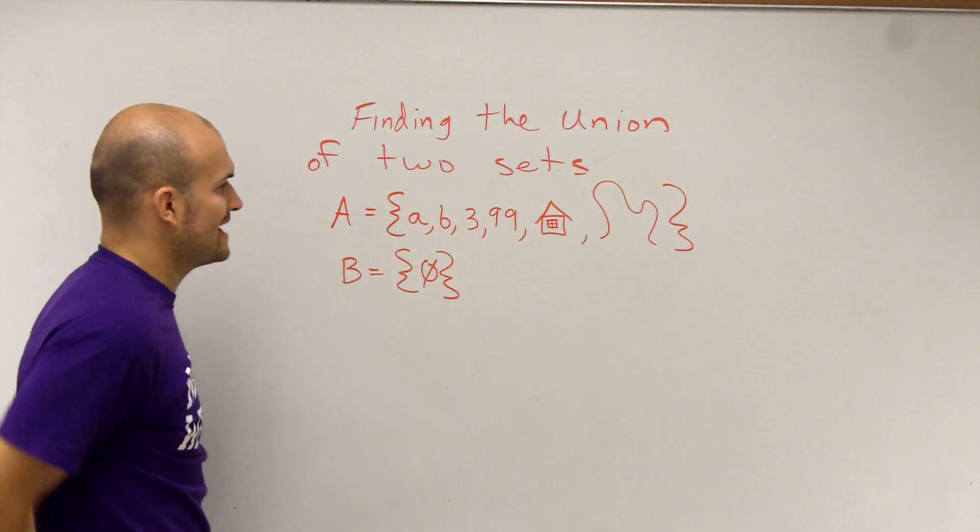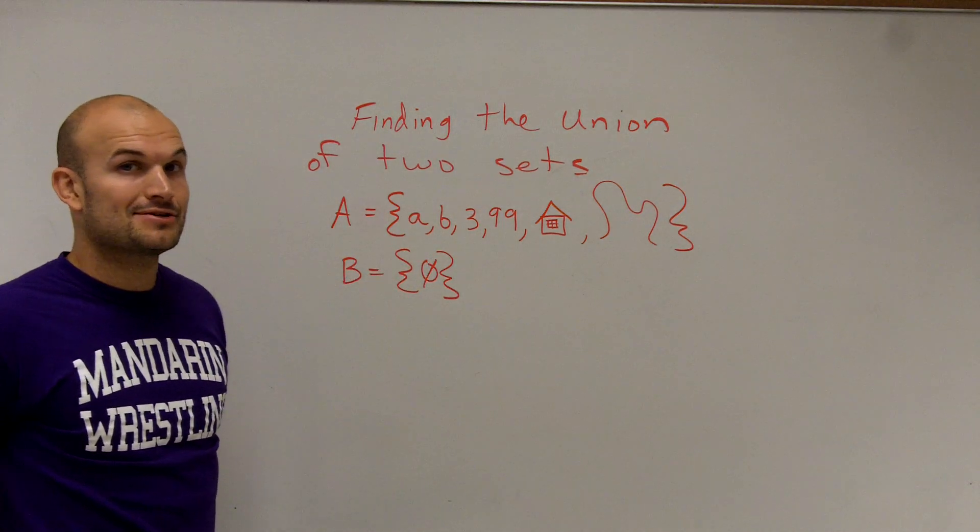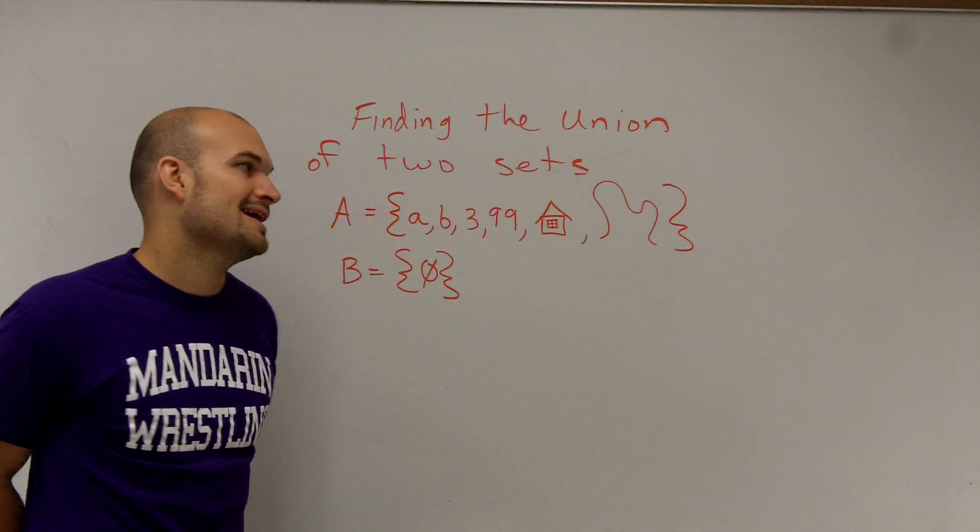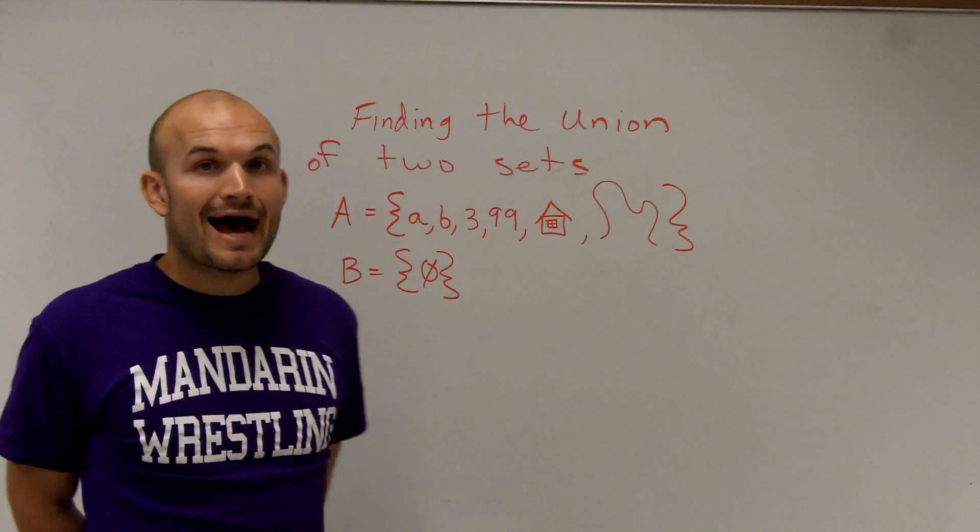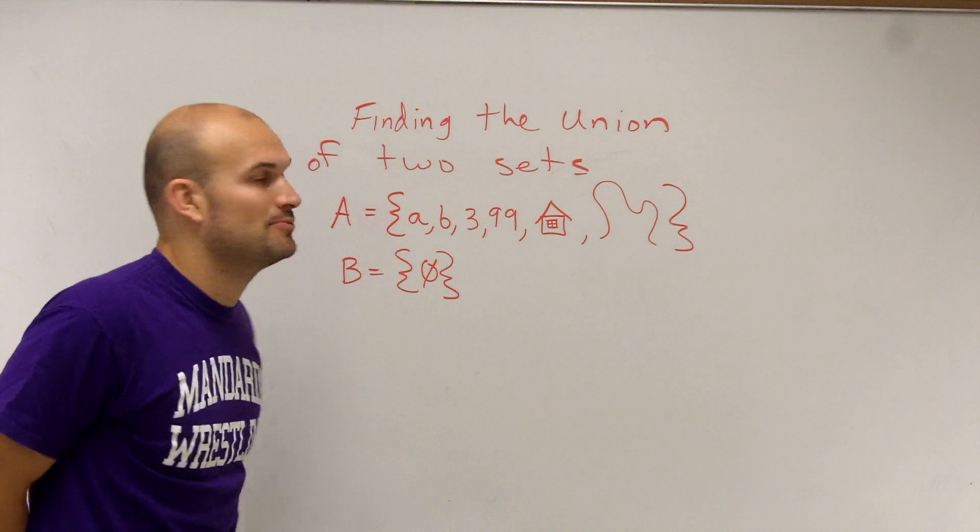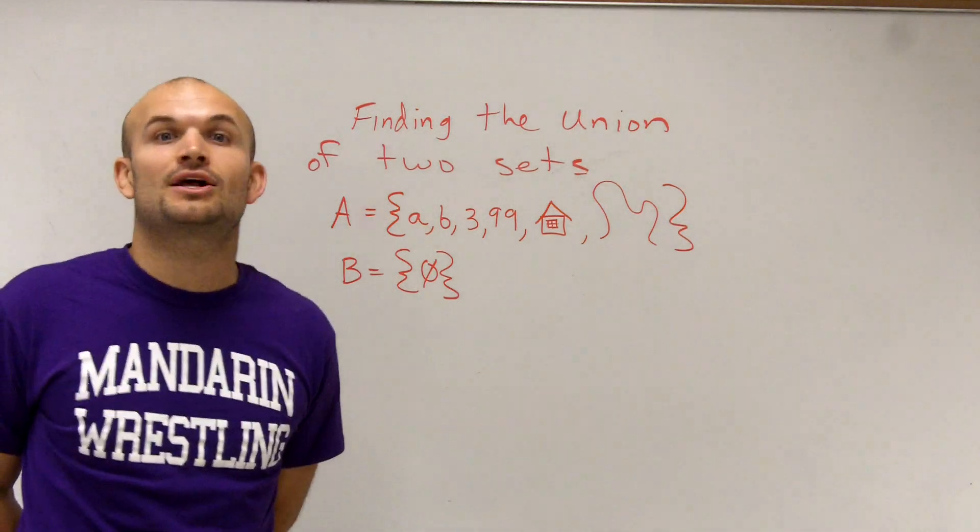So here I have set A, which is A, B, letters, the numbers 3 and 99. Then I drew a picture of a house as another element, and then I drew a picture of the map of the lower peninsula of Michigan.